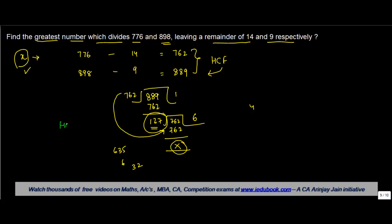Hence, the HCF of these two numbers is 127. Therefore, 127 is the number which when divides 776 and 898 leaves a remainder of 14 and 9 respectively.